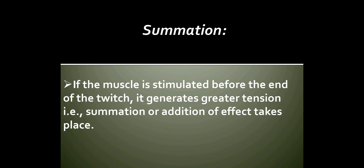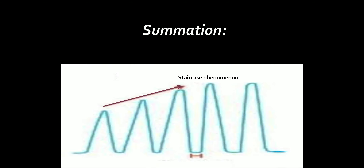Summation: If the muscle is stimulated before the end of the twitch, it generates greater tension — that is, summation, or addition of effect, takes place. Repeated stimuli will produce increasing strength of contraction. This is also called the staircase phenomenon.